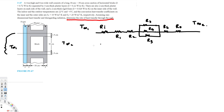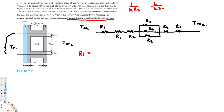Now let's find each resistance individually. The two surrounding boundaries are convection; all internal layers use conduction. For convection, the formula is R = 1/(h·A_s), and for conduction it is R = L/(k·A). We start with the inner convection resistance: R_initial = 1/(h1 · A_s), where h1 = 10 W/m².